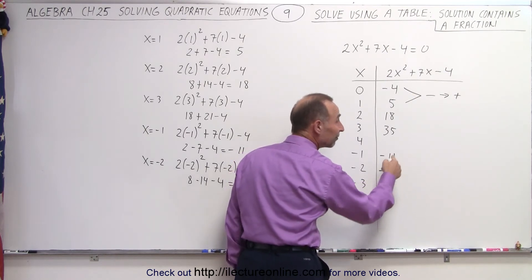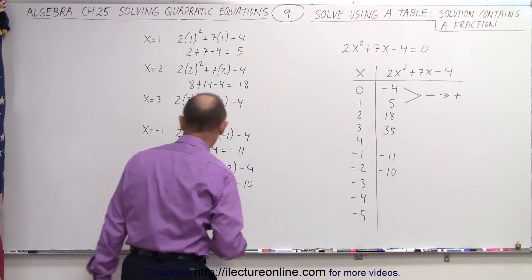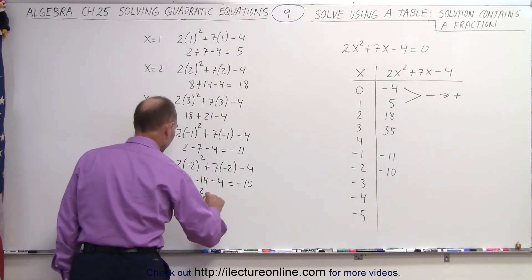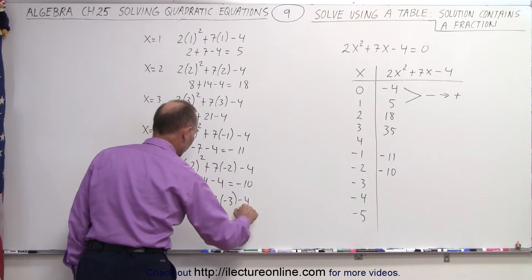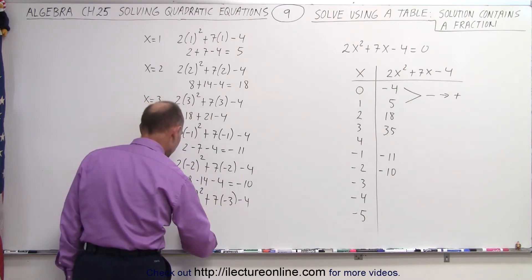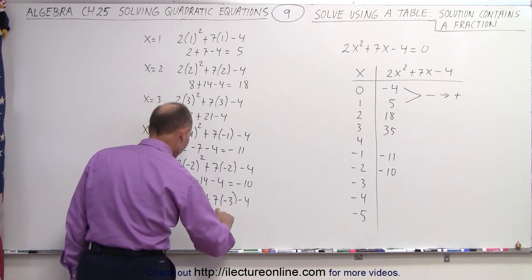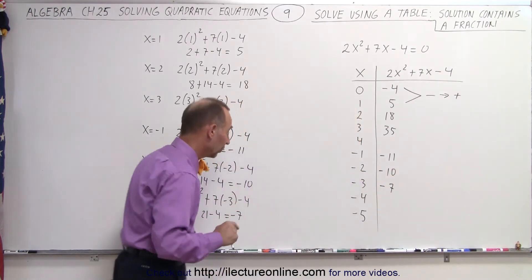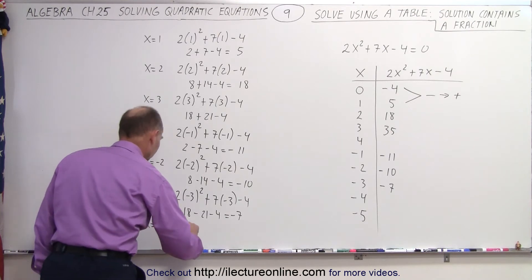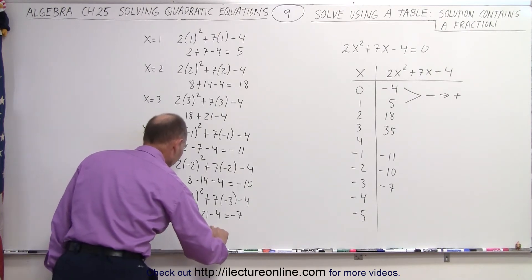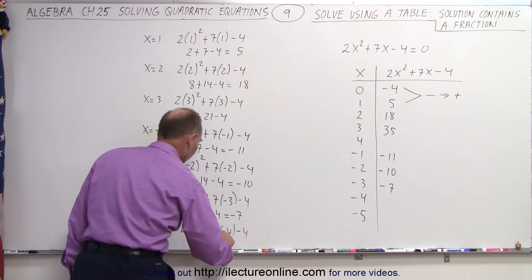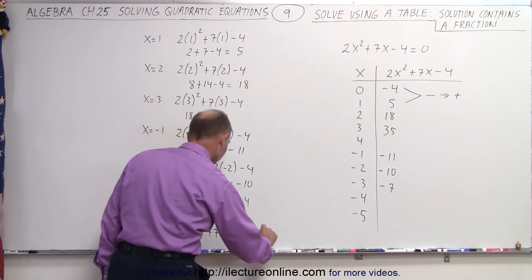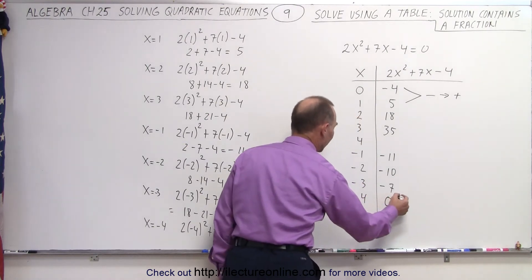When x=-3, we have 2 times negative 3 squared plus 7 times negative 3 minus 4, that's 18 minus 21 minus 4, equal to negative 7. Sure enough, it looks like it may be getting back down to 0. When x=-4, we get 2 times negative 4 squared plus 7 times negative 4 minus 4, that's 32 minus 28 minus 4, which is equal to 0. There it is — we have one of the solutions.